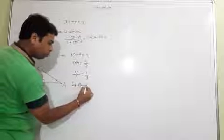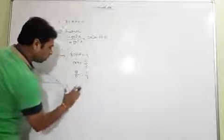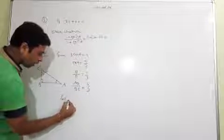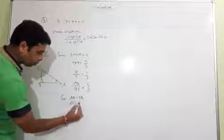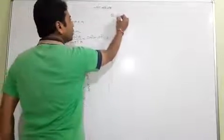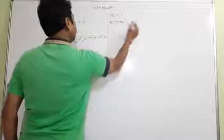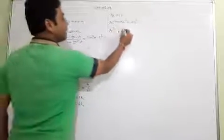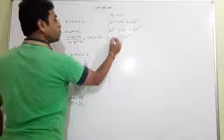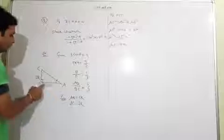Let base AB equal to 4k and perpendicular BC equal to 3k. By Pythagoras theorem: AC squared equals BC squared plus AB squared, which is 3k squared meaning 9k squared, plus 16k squared, giving 25k squared. So AC is equal to 5k. Now you have all three sides: AB equal to 4k, BC equal to 3k, AC equal to 5k.